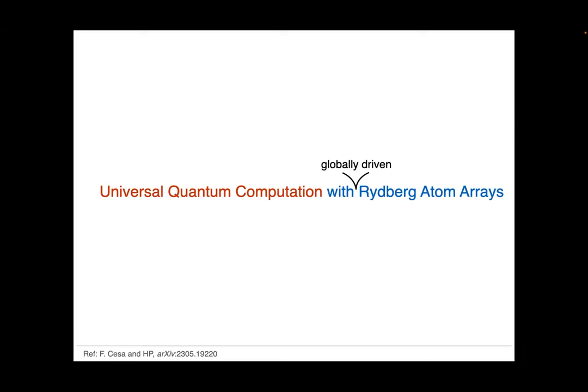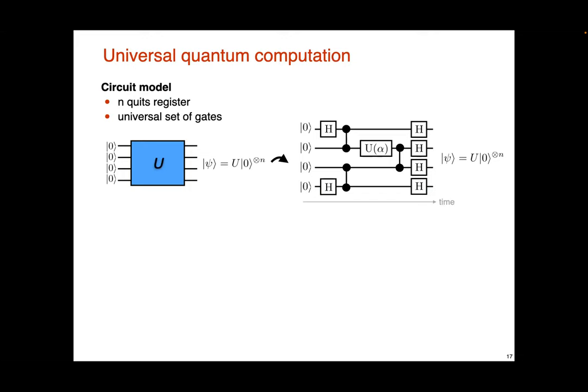With that, I'm at the end of the first part of my talk, and I'd like to move directly to the second part, which is about universal quantum computation. The idea is we want to do universal quantum computation in a circuit model. As you all learned in your textbook, you have qubits, you want to apply a big unitary on these qubits and get some output state psi. In a circuit model, you break down this unitary into a universal set of single and two-qubit gates, write down a circuit, and execute it.